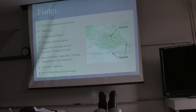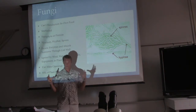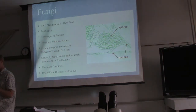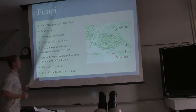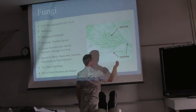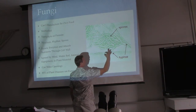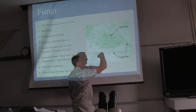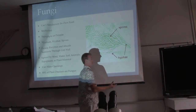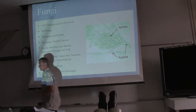Fungi cannot manufacture their own food like plants can. They are multi-celled, but their cells do not bunch together like plant or human cells. Instead they go in a long string, one after the other, and those are called hyphae — a long strand where each section has a cell wall and a nucleus, like any other cell, but arranged head-to-toe in a straight line.